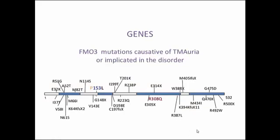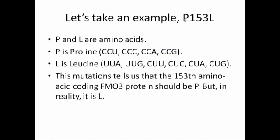Genes are numerous. FMO3 is our center of interest. All these mutations can occur in FMO3 and cause trimethylaminuria, or could be implicated in the disorder. There are many codes, letters, and numbers. Let's take an example to better understand — let's look at mutation P153L, where P and L are amino acids.